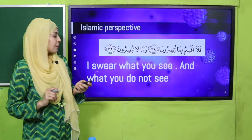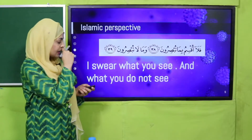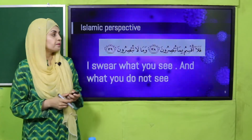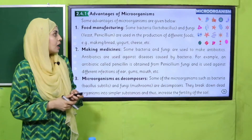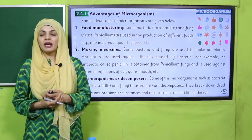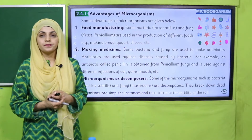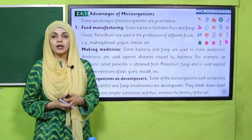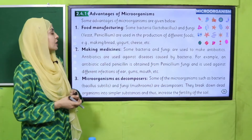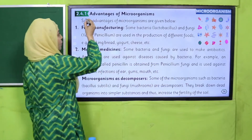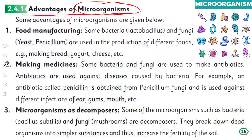From an Islamic perspective, we consider what we see and what we do not see. My dear students, quickly open page number 26 in your Science 5 books. Today we will discuss the advantages of microorganisms. Some advantages of microorganisms are given below: food manufacturing.